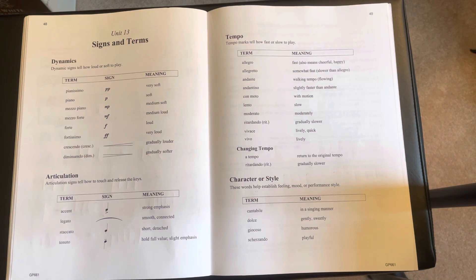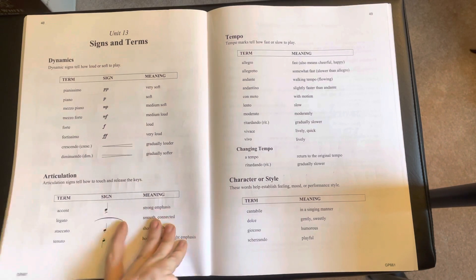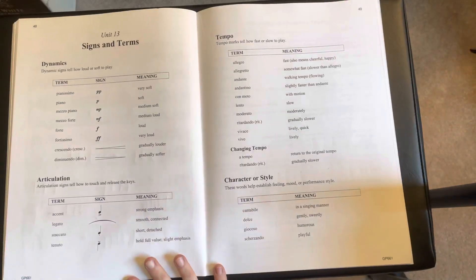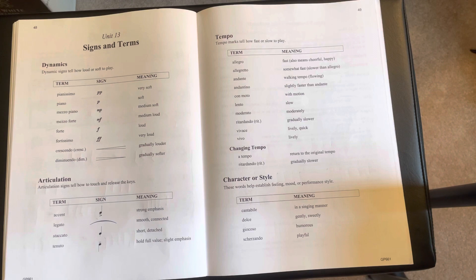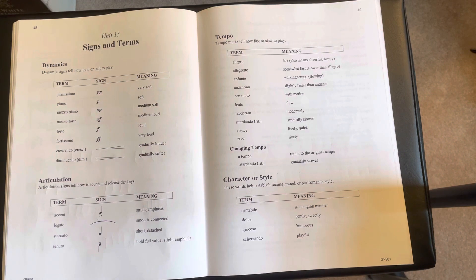Unit 13, Signs and Terms, is really easy and straightforward from the Fundamentals of Piano Theory, so I'm just going to roll through it really fast. This is just kind of like a review from terms of the last book and adding on some new terms.